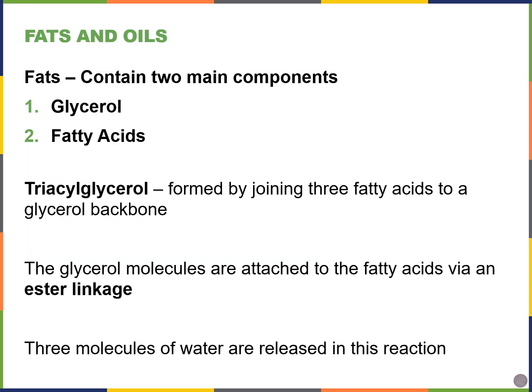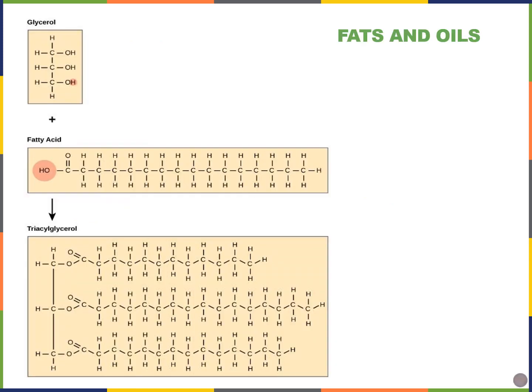Our first type — fats — are comprised of two main elements. Fats are made of a glycerol molecule combined with three fatty acids to form something called triacylglycerol. We have three fatty acids and a glycerol backbone connected through an ester linkage, and this is a dehydration synthesis reaction, so three molecules of water will be released as products.